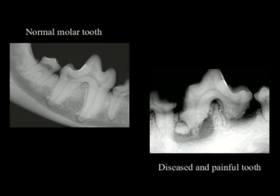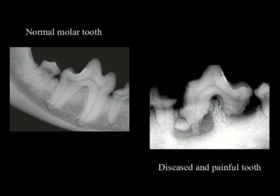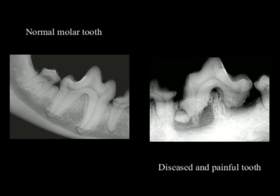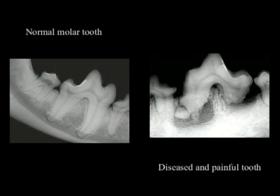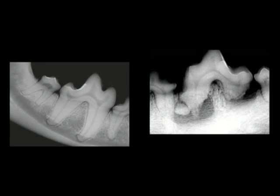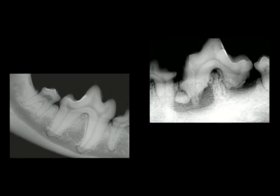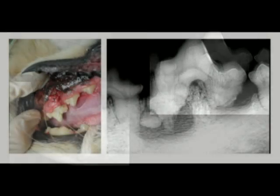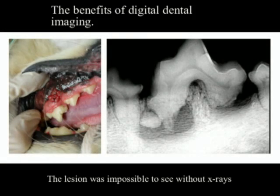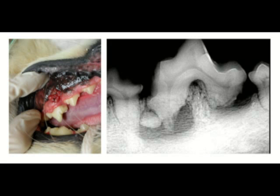On the left is a normal tooth with full roots. Notice that the roots are gone on the tooth on the right. There's even a bone sequester present between the two adjoining teeth. This is a good example of how deceiving a gross evaluation of teeth can be.